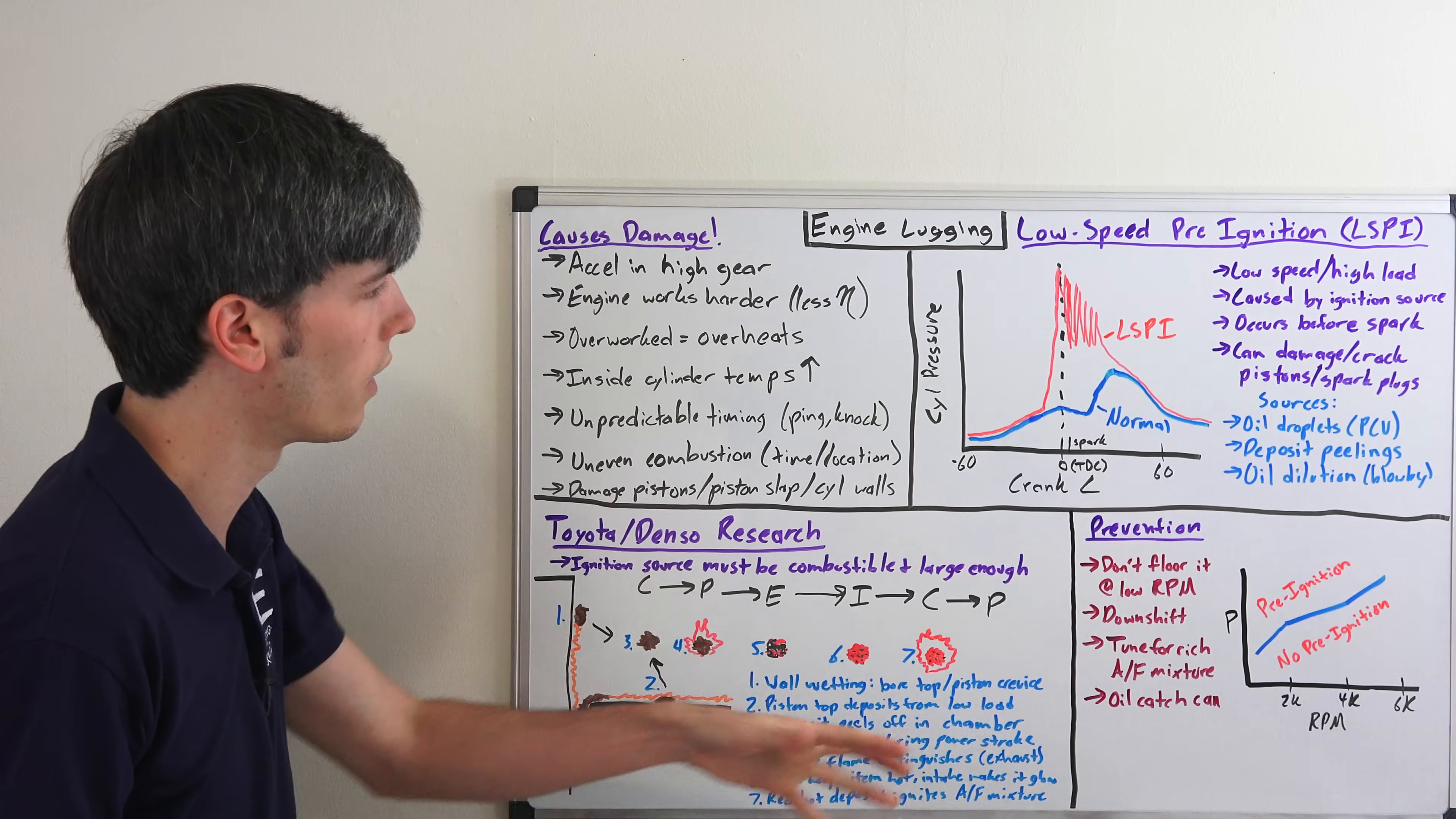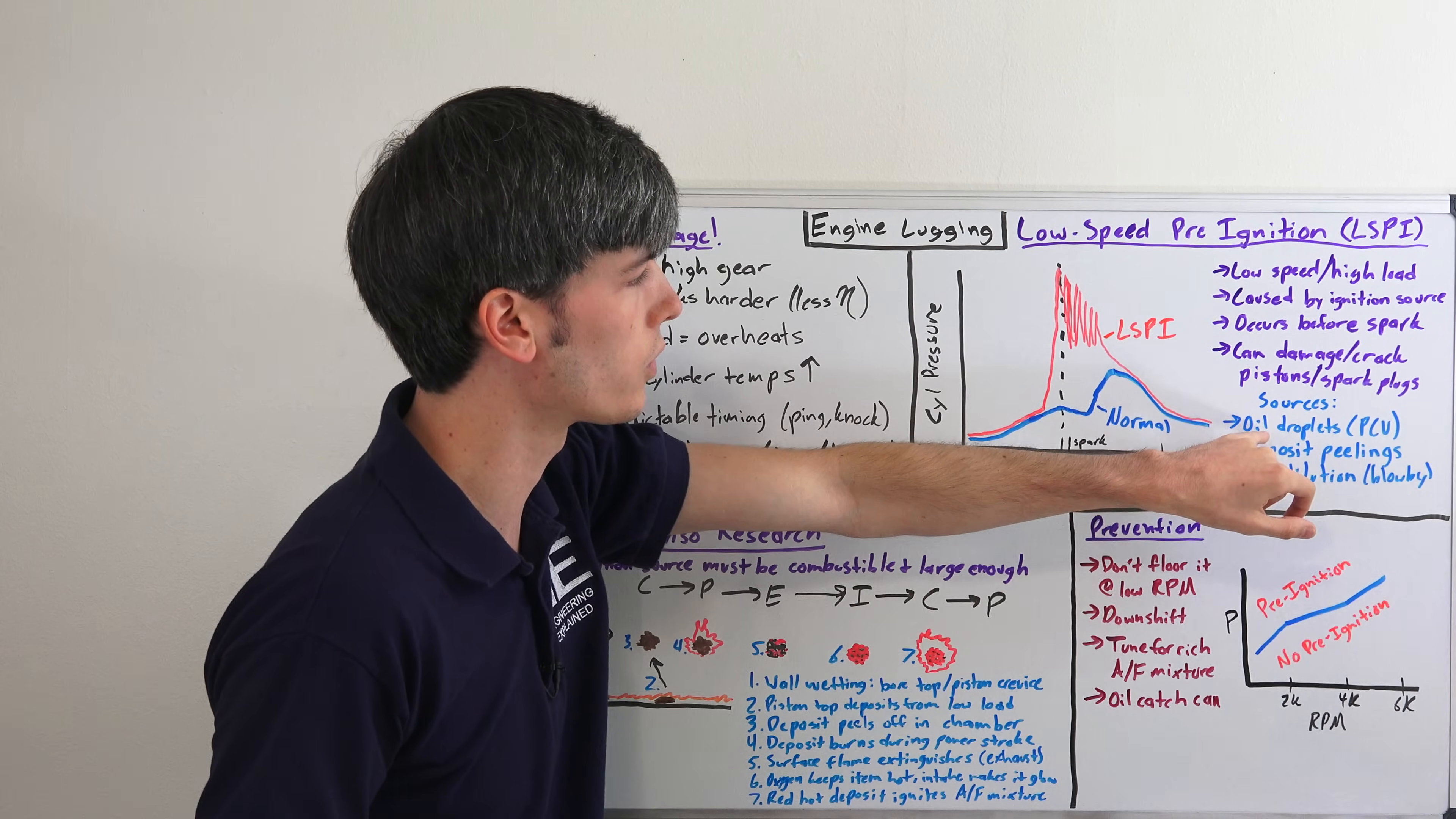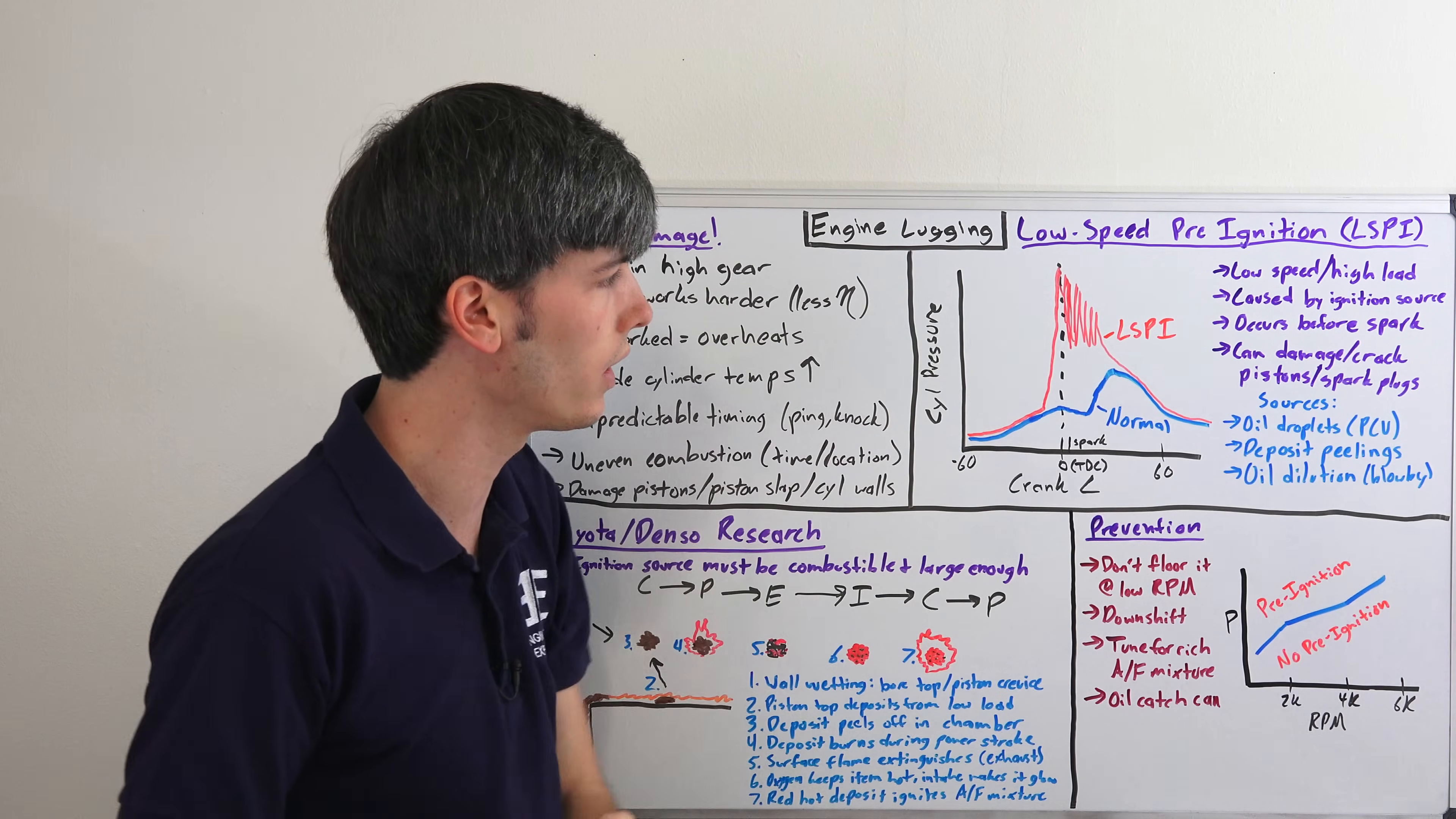Also, I think an oil catch can would be a great way to help prevent this. You're not going to be introducing oil droplets as I mentioned. That was one of the things that they thought could be a source of it - oil droplets introduced from your PCV valve.